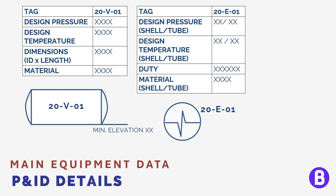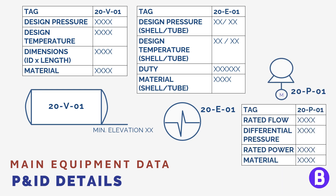When we add the table for a pump, we don't need to add dimensions; we rather need to add the main specifications, which are flow rate, differential pressure, and power. Again, the data in the table depends on the standard followed when preparing the P&ID. That's why we can see different data on different P&IDs depending on the company or project requirements.